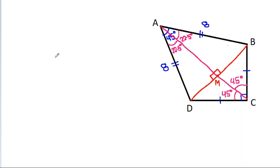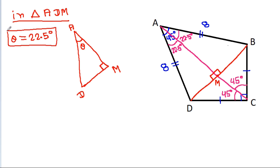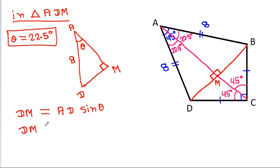And now in triangle ADM, this angle is 90 degrees and suppose this angle is theta, where theta is equal to 22.5 degrees. And AD is 8. So DM will be equal to AD times sin theta, and DM will be equal to 8 times sin theta. Also, these angles will be 90 degrees.